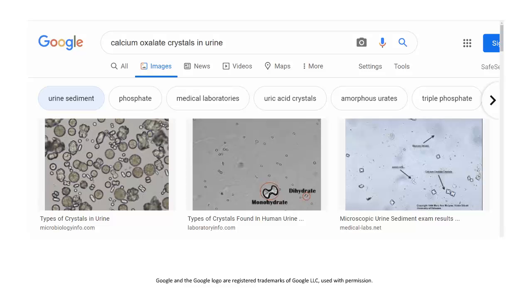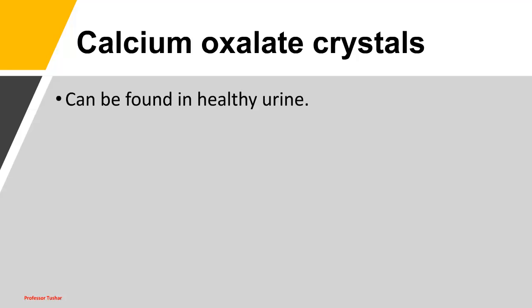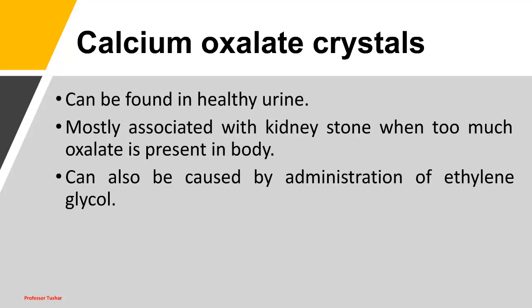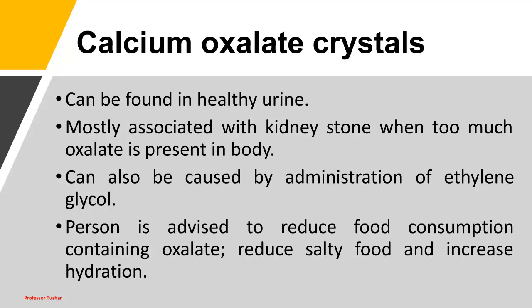Calcium oxalate crystals in urine can be found in healthy urine but are mostly associated with kidney stones when too much oxalate is present in the body. They can also be caused by ingestion of ethylene glycol. A person is advised to reduce food consumption containing oxalate, reduce salty food, and increase hydration.